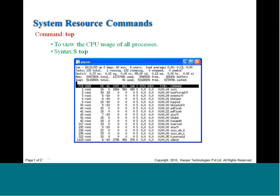The task states shown are running, sleeping, stopped, and zombie — task is synonymous with process. CPU utilization is also displayed — for instance 0.7% for user tasks and 0.1% for system tasks. There is also memory information. The top command is very similar to Windows Task Manager in that it provides a continuously updated view of CPU and memory consumption.